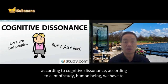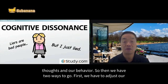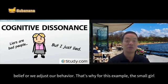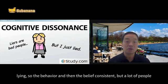We feel very bad and very uncomfortable. According to a lot of studies, human beings have to find a solution for solving this inconsistency between our thoughts and our behavior. We have two ways to go: first, we can adjust our belief, or second, we adjust our behavior.